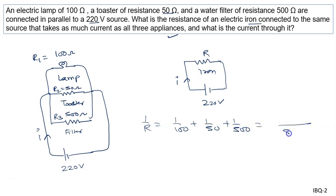500 is the LCM. 500 divided by 100 is 5, 500 divided by 50 is 10, and 500 divided by 500 is 1.